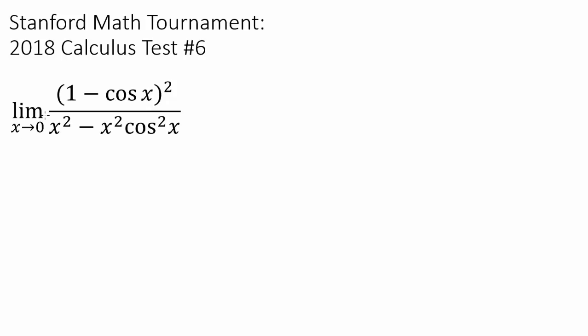Just plugging in x equals 0 to all of the x's is not going to work because cosine of 0 is 1. So you're going to have (1 - 1)² or 0 on top, and when you plug 0 into the bottom, you're going to have 0 - 0, which is 0. And obviously, 0/0 is indeterminate, so that's not going to work. So we have to find some other way.